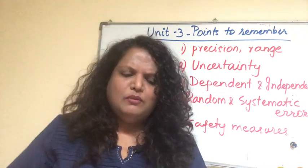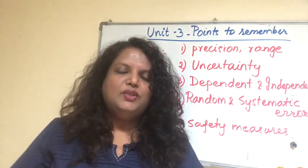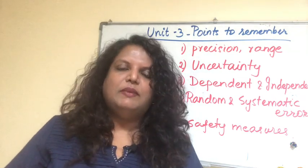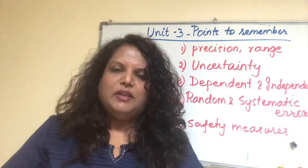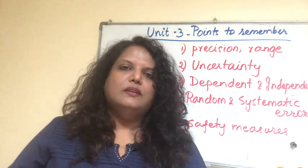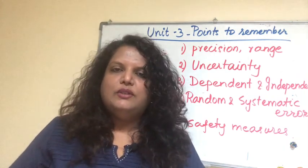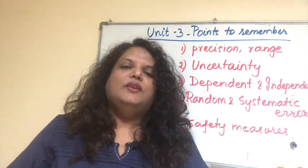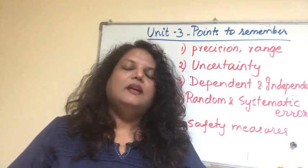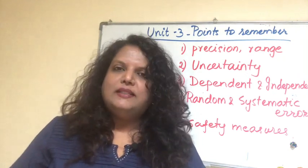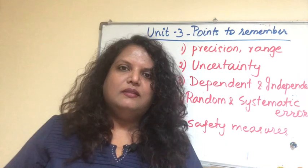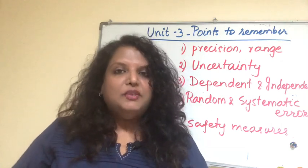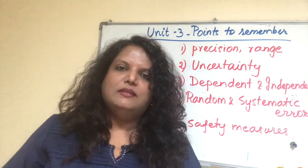Now let's see where you would include precision and range. In almost all planning, you must write about the appropriate instrument you would choose for measurements. If you take the simplest experiment like Ohm's law, the quantities you keep as variables are current and potential difference. If you just write 'I would choose a voltmeter for measuring potential difference and an ammeter for measuring current,' you might think that's complete — but at AS level, they expect you to choose the appropriate instrument, meaning you must write the range and precision of the instrument you're going to choose.